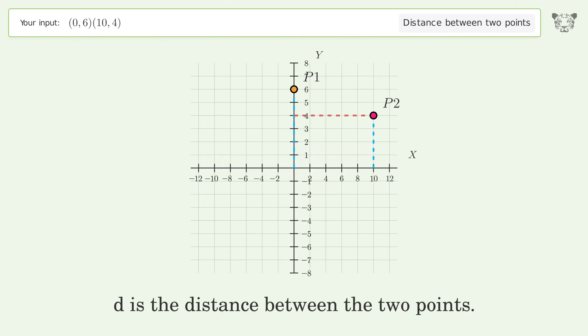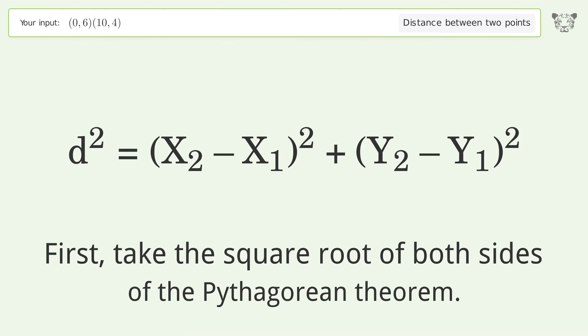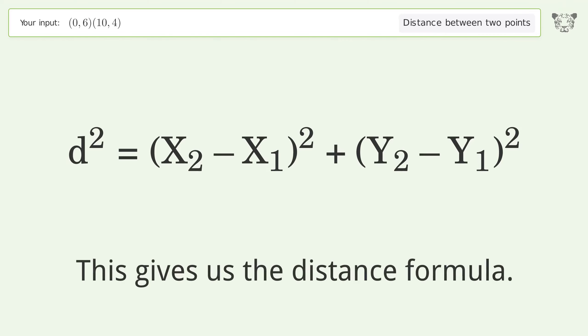d is the distance between the two points. First, take the square root of both sides of the Pythagorean theorem. This gives us the distance formula.